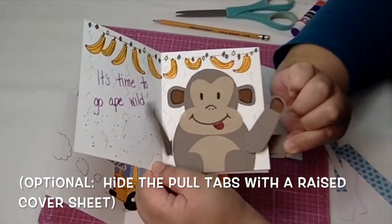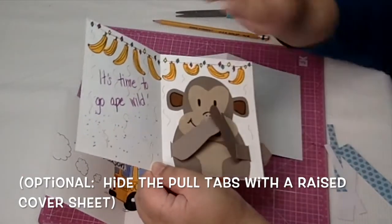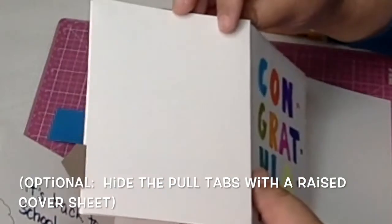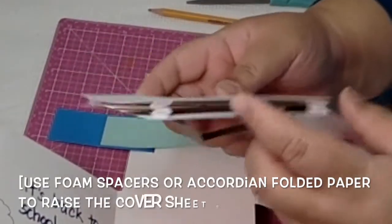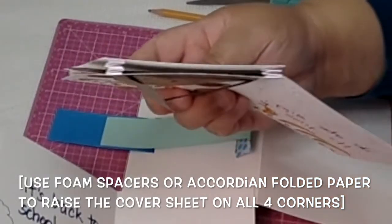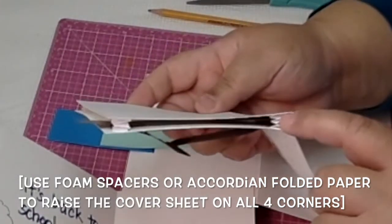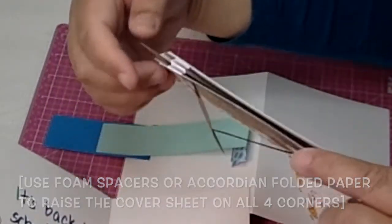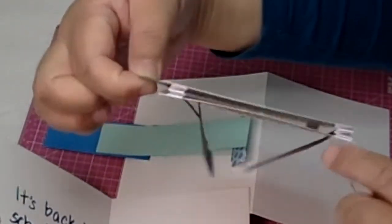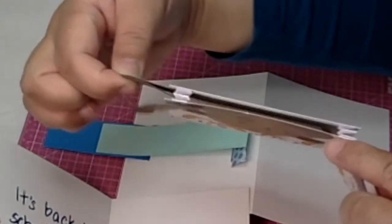And all I did was raise it up - so I used foam, actually an accordion folded piece of paper, and I cut it in four pieces and I stuck it on all four corners. That way it's raised up and the pull tab can swing back and forth.